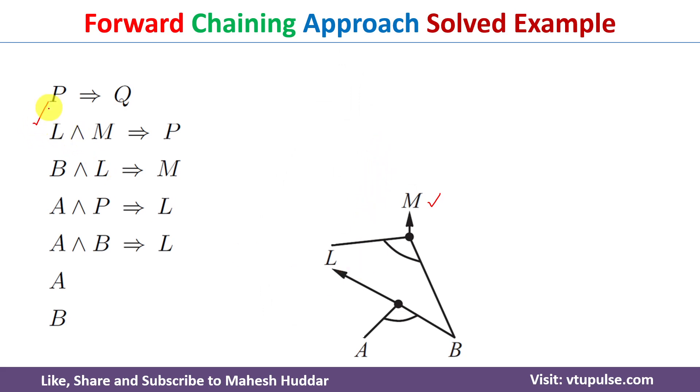Now if you look at this rule, that is L and M implies P. L and M are itself true. That means all the premises of this rule are true. The meaning of this one is the conclusion is also true. That is what I have drawn over here.